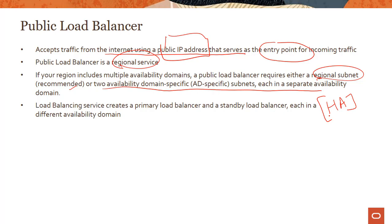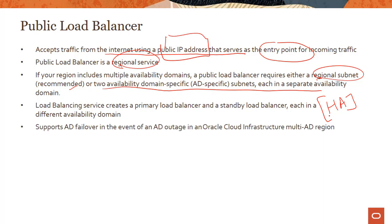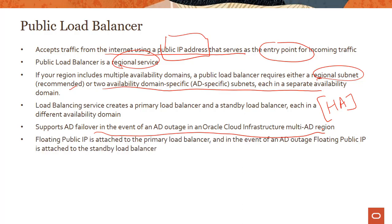If you just have a single load balancer and something happens in that availability domain, there's a chance your load balancer would stop serving incoming traffic. So the load balancer itself must be highly available. It supports AD failover — in a multi-AD region you have a primary AD and a secondary AD. The floating public IP is attached to the primary load balancer, and in the event of an AD outage, that floating IP gets attached to the secondary load balancer.